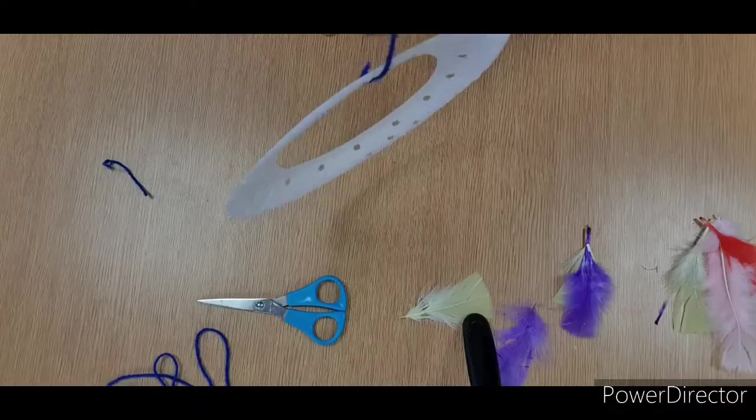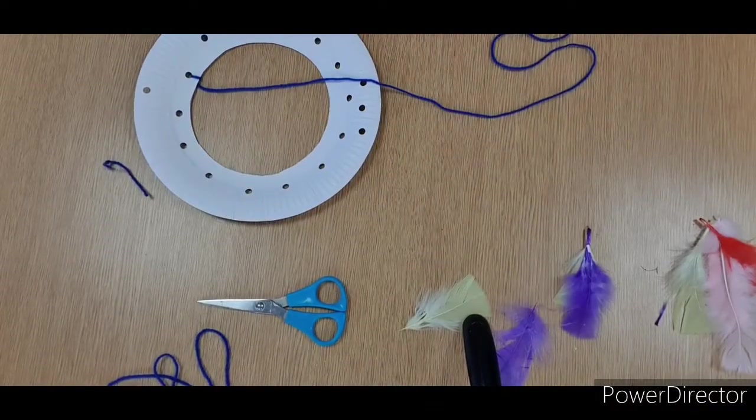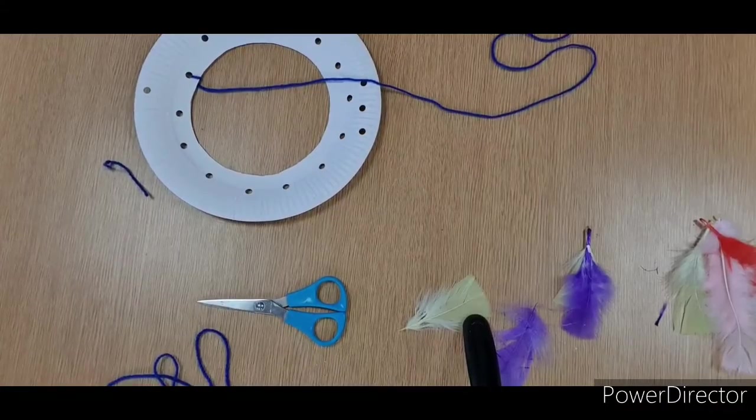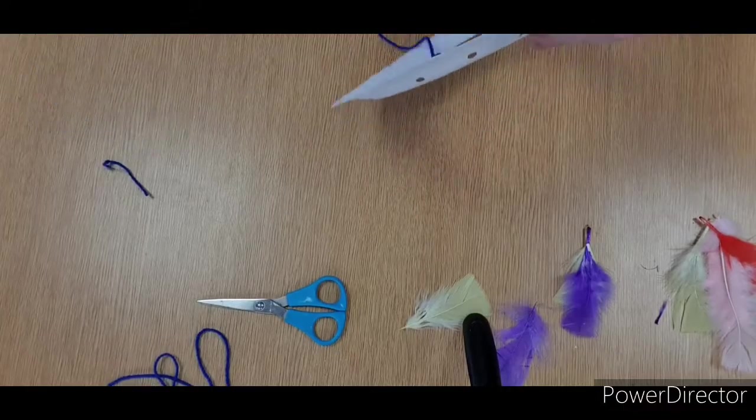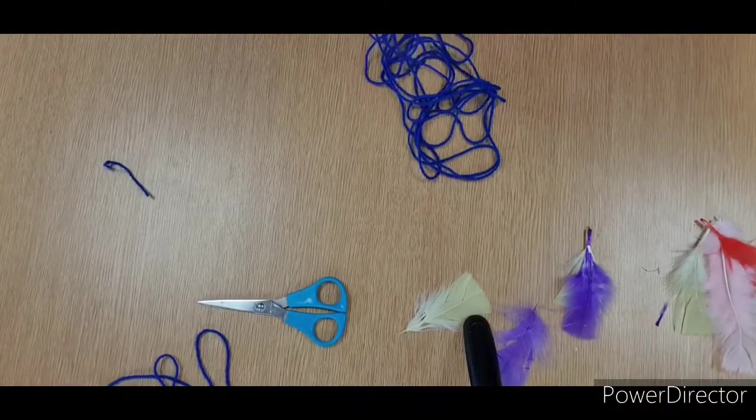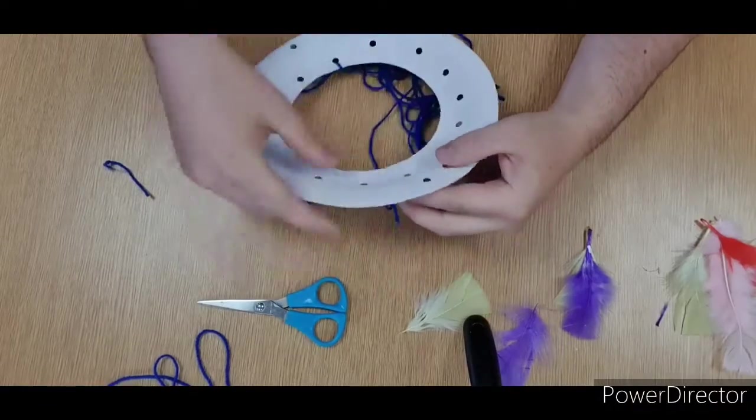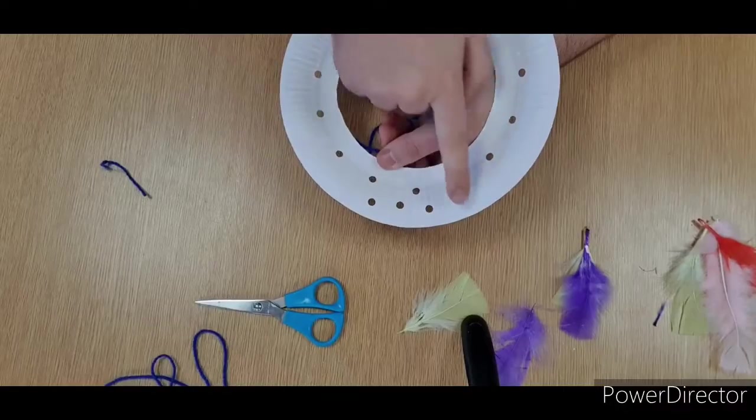Now you should be able to hopefully dangle it and it doesn't come off, so that's working beautifully. Now we're going to find the other end of our wool and we are going to start feeding it through. We want it to be quite cool and different, so we don't want to just copy the same holes. We want to make it so the whole thing is covered.